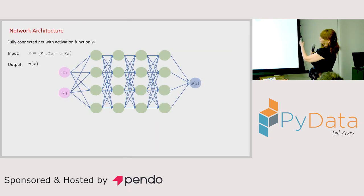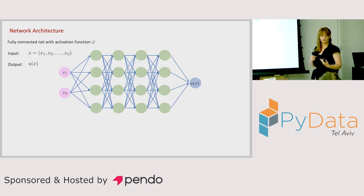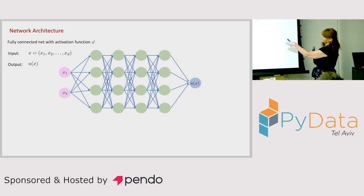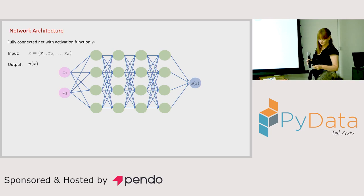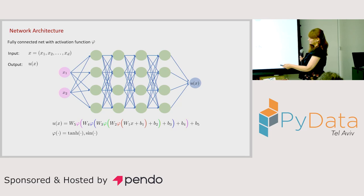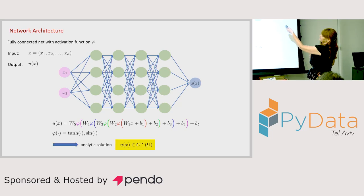We use a very simple architecture because we're dealing with physical problems — not like CNNs and complex architectures for image classification. We use an MLP with a few layers and hyperbolic tangent-like activation, which is enough to solve physical problems. The input is x₁, x₂ depending on the problem dimension, and the output is U(x). Everything is differentiable because we have an analytical formulation with smooth activations.